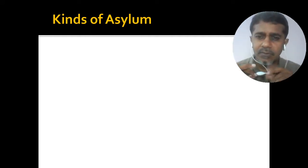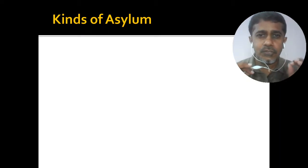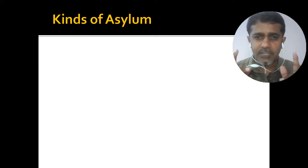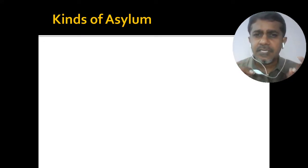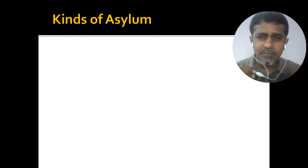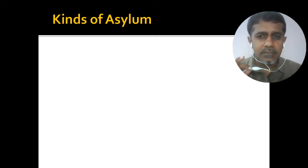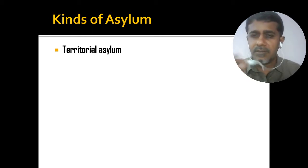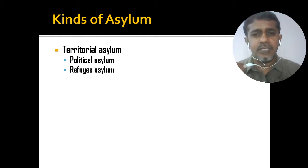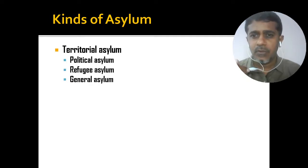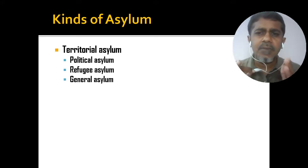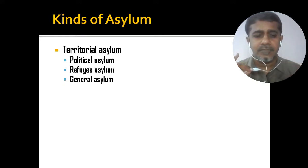Moving to the kinds of asylum: they are broadly grouped into two heads. First is territorial asylum, and second is extraterritorial asylum — also referred to as political or diplomatic asylum among other names. Territorial asylum is further classified into political asylum, refugee asylum, and general asylum. These three are the important kinds of territorial asylum which states may grant to foreign nationals in their territory.